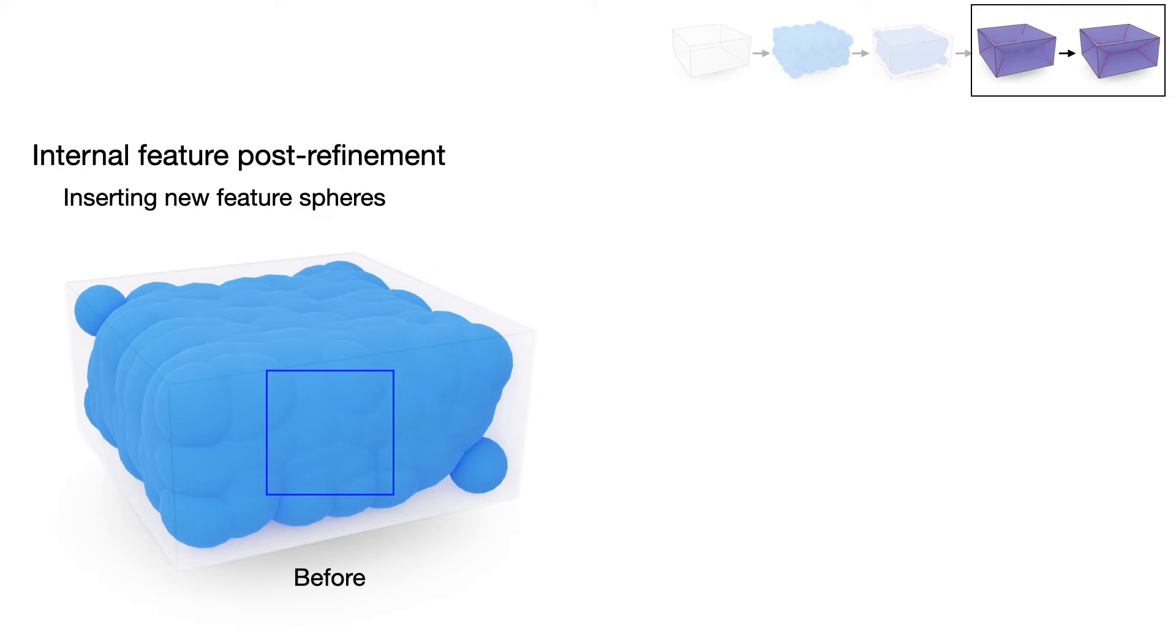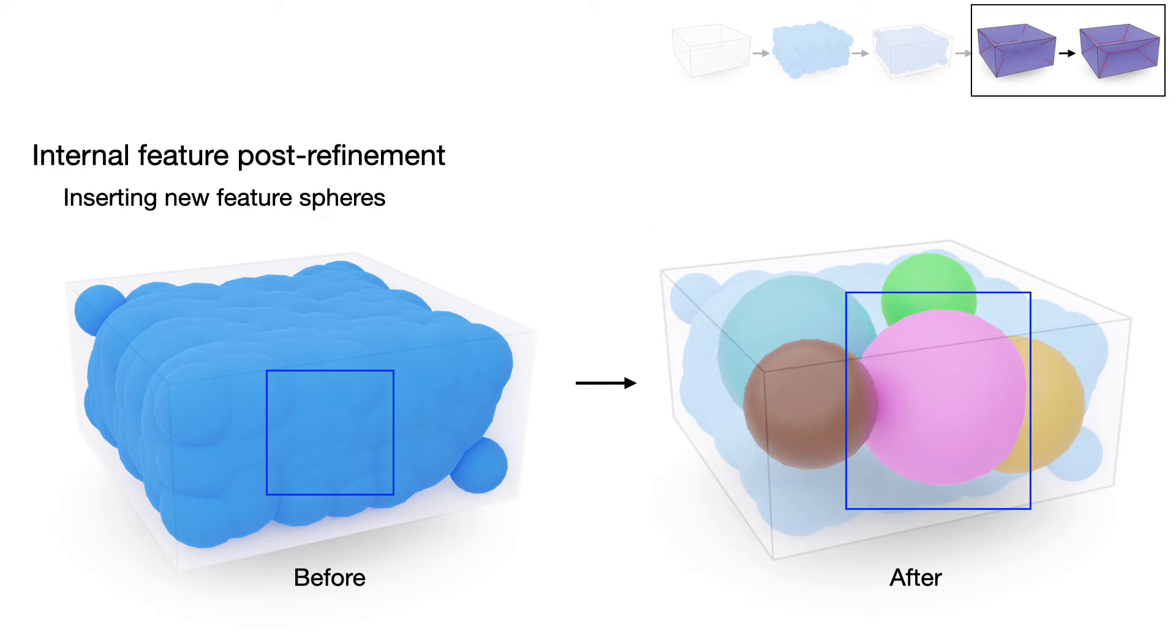Then, we sample new internal feature spheres using the tangential surface contact points aggregated from two ill-connected spheres.